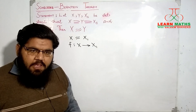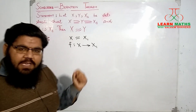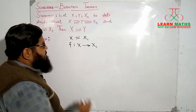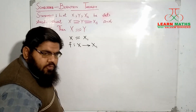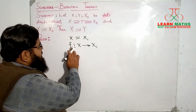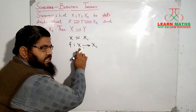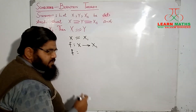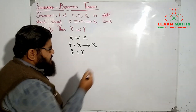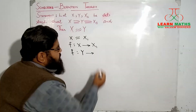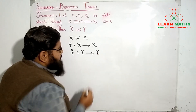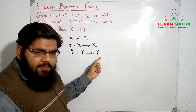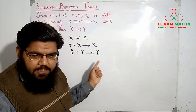Since the cardinalities of X and X₁ are the same, we can have a bijection between these two sets, which I have named as f. Now I am going to restrict this function f to the subset Y of X. Restricting f from Y to a subset of X₁, which I will name Y₁, this restriction will also be a bijection, meaning Y and Y₁ are equipotent to each other.